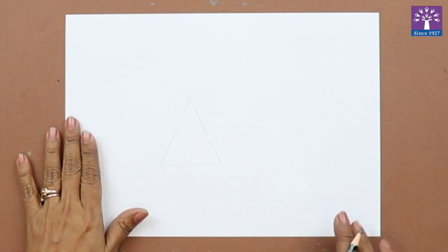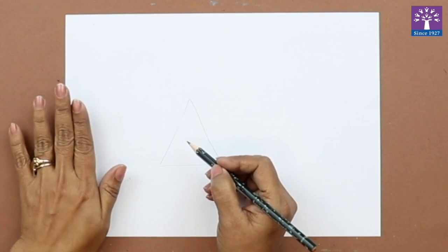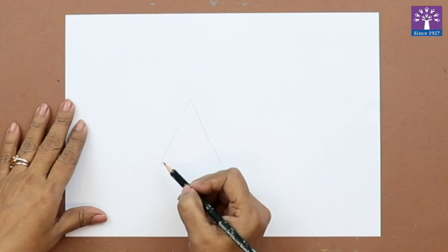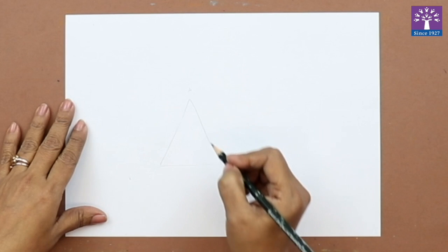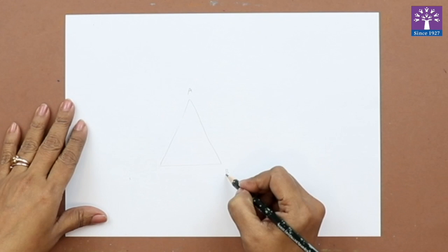This is the center of the page, but I have drawn the triangle more towards the left side of the page. For us to understand, let's lightly mark the three corners of the triangle A, B, and C.